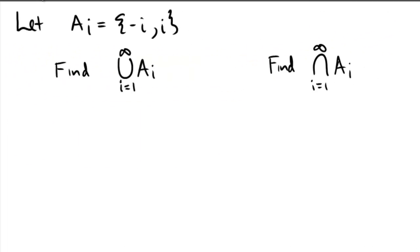Here we are asked to find some big unions, some indexed unions. So we're letting a sub i be a doubleton. It's got two elements in it, negative i and positive i.